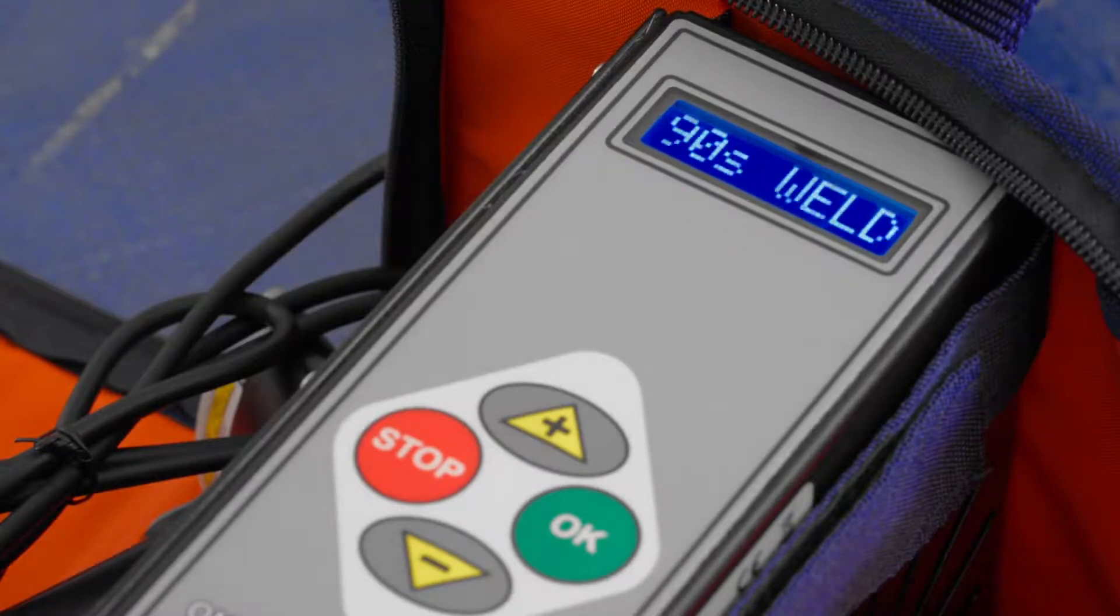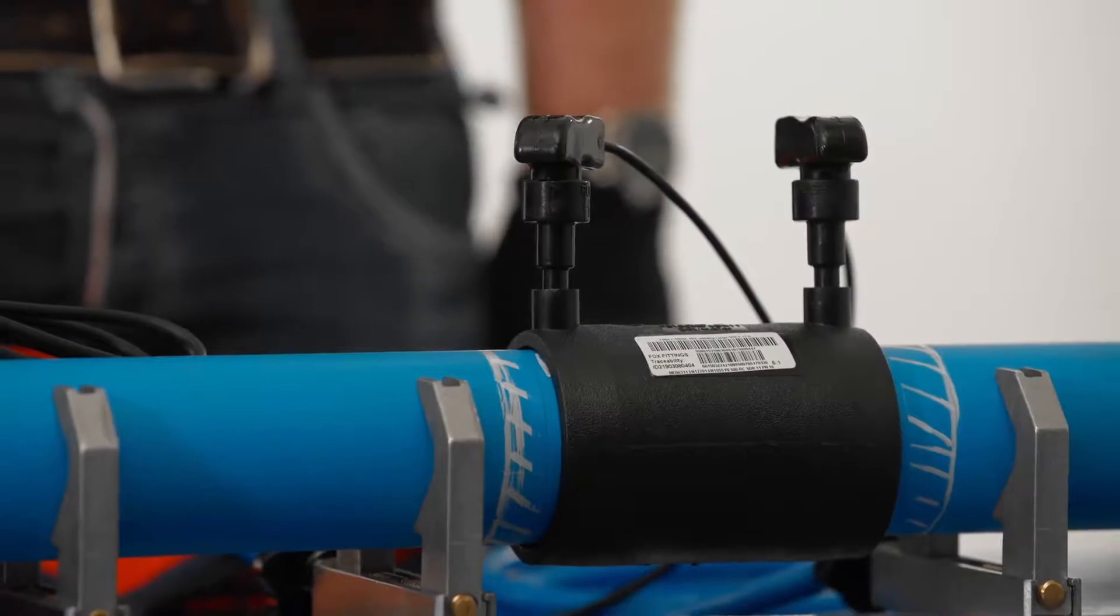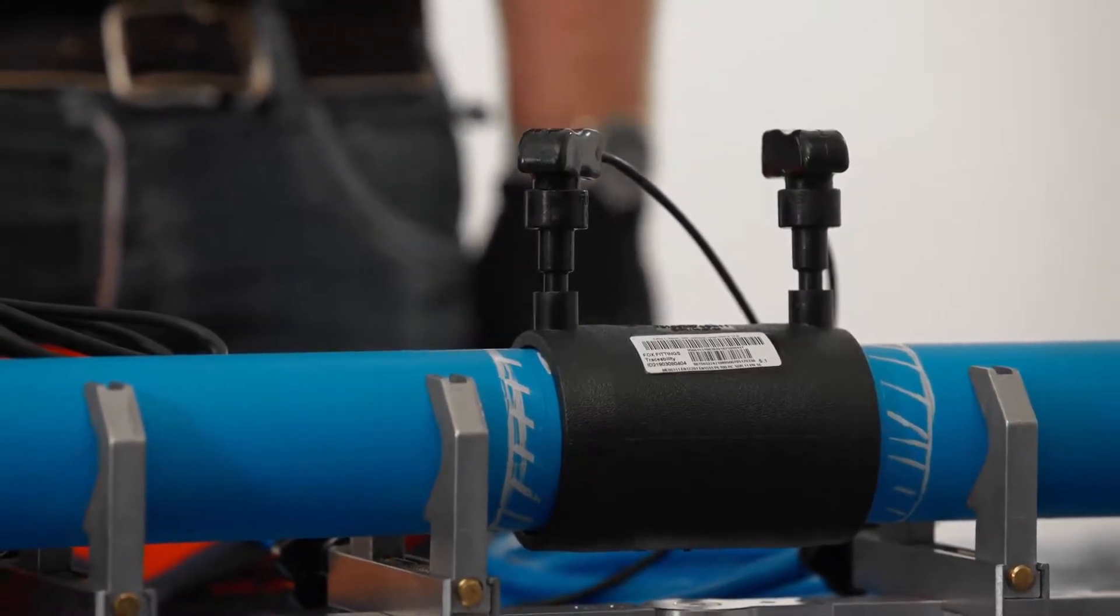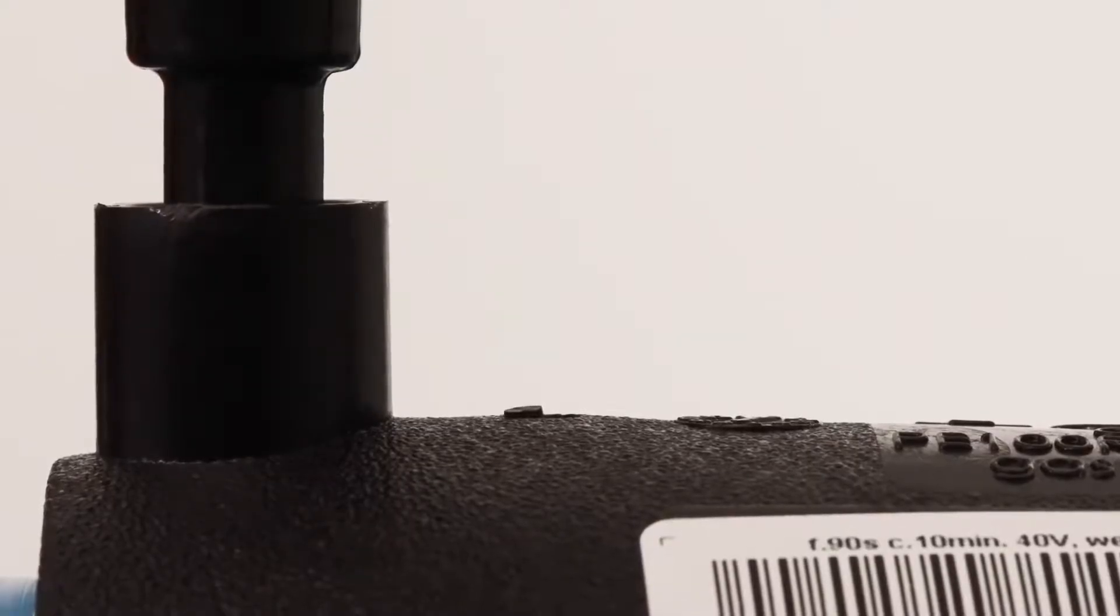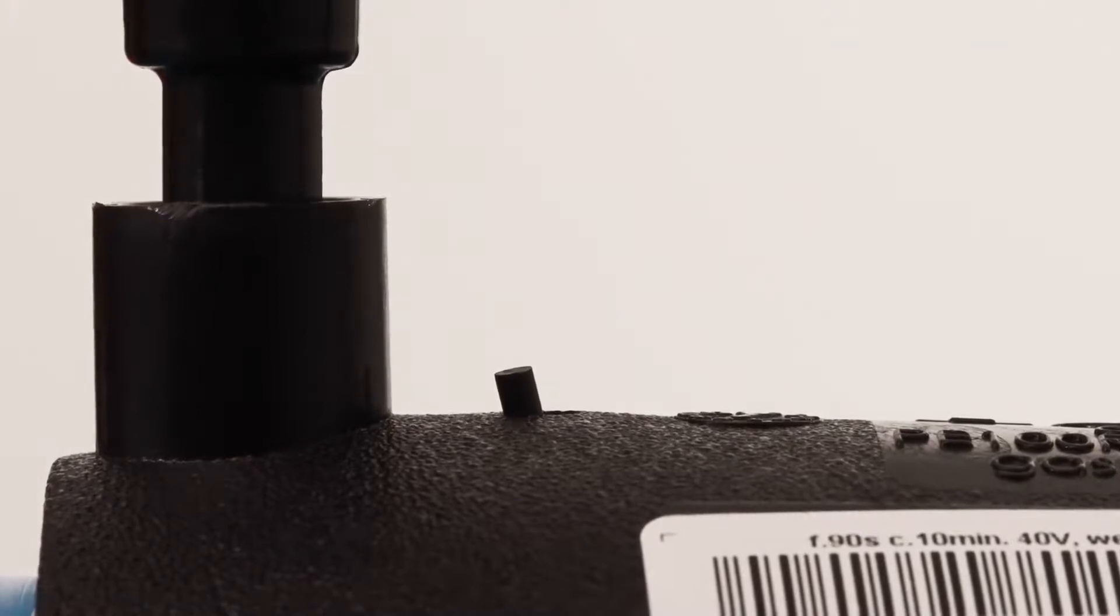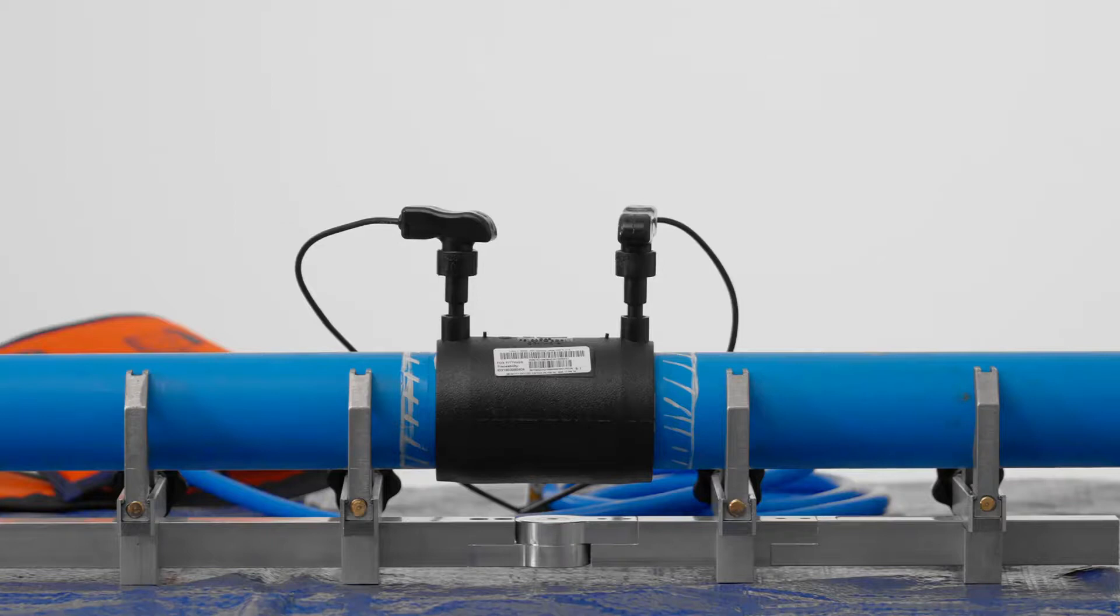Inspect the weld quality carefully. Check that the pipe and fitting have not moved during the weld and that the fitting is still correctly positioned against the depth marks. Observe the fitting indicator pins. Evidence that these have risen indicates a healthy increase in melt pressure inside the joint.